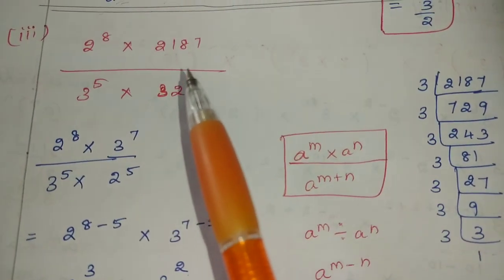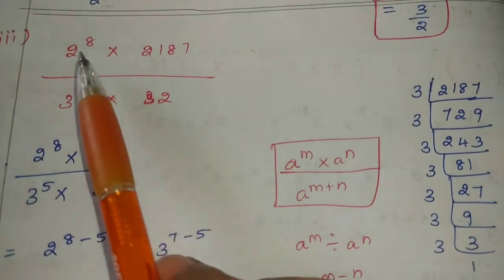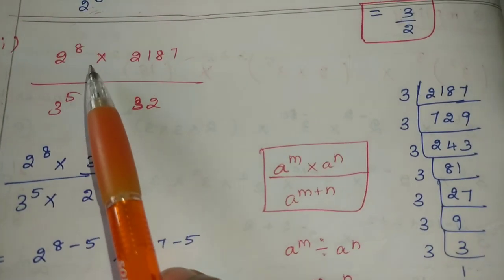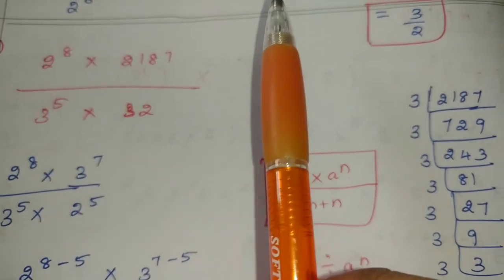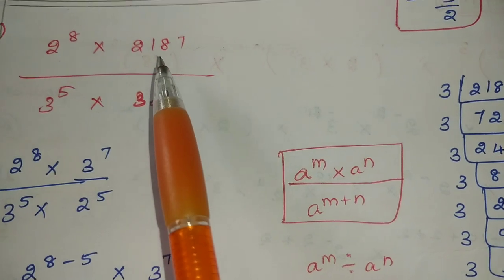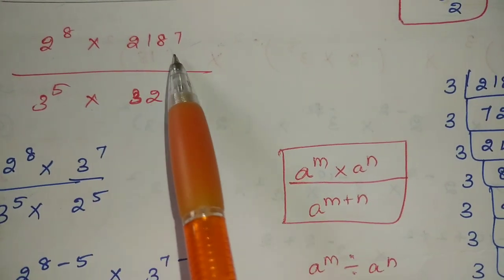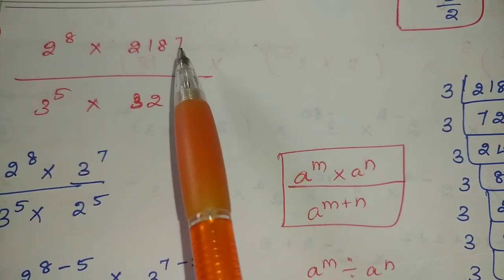Next, third problem: 2 power 8 into 2187, divided by 3 power 5 into 32. Here we can see first 2 power 8, and we can see 187. We can see 2 — reduce.